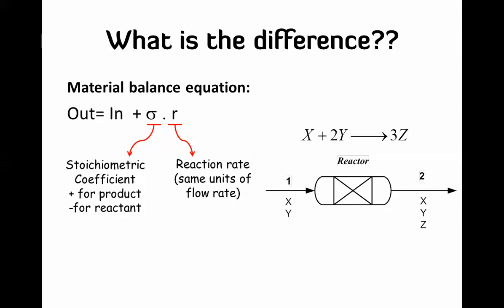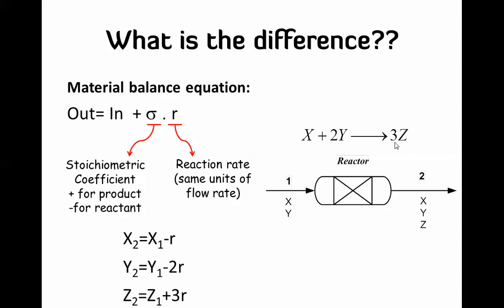The r is the rate of reaction, which is how much of these components is consumed in the reaction. It has the same units as the flow rate of the components. If we do the balance equations for the three components: x in stream 2 equals x in stream 1 minus r (stoichiometric coefficient is 1, so minus 1·r); for y it will be minus 2·r; and for z it will be plus 3·r.